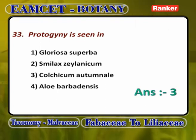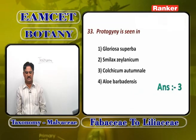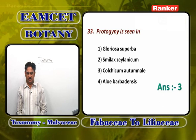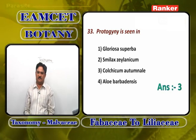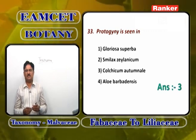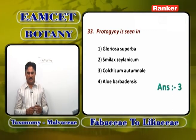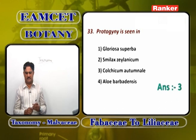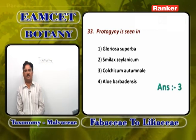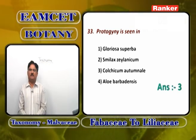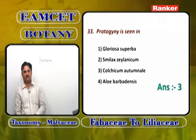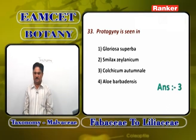Protogyny is seen in which plant of Liliaceae? Gloriosa superba shows hercogamy with essential organs in different directions. Smilax gylinicum shows unisexual flowers. Aloe barbadensis shows panicle inflorescence with self-pollination possible. Colchicum autumnale shows protogyny — maturation of gynoecium much before androecium — preventing self-pollination, allowing only cross-pollination. Answer is 3.